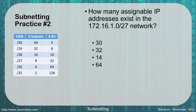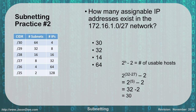For the next problem, we want to figure out how many assignable IP addresses exist in a 172.16.1.0/27 network. The key word here is 'assignable.' Looking at a /27 in our chart, the number of IPs is 32. But that's not the right answer because we have to account for the network address and the broadcast address, so we subtract two. 32 minus 2 gives us 30 assignable IP addresses.